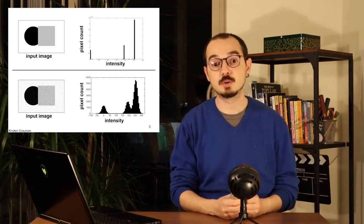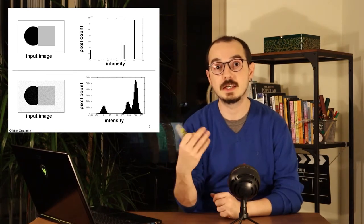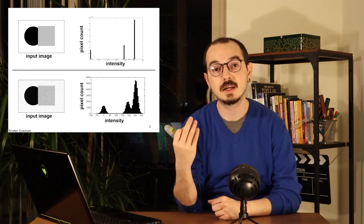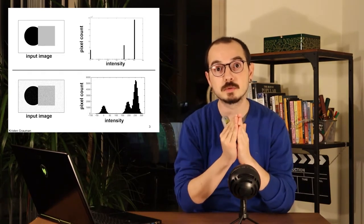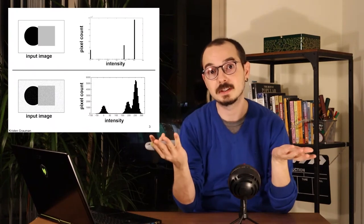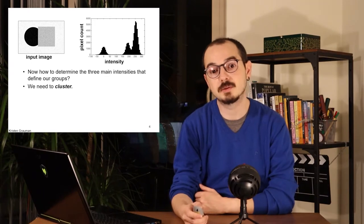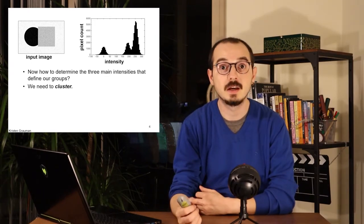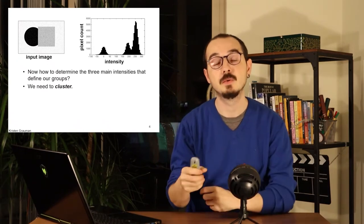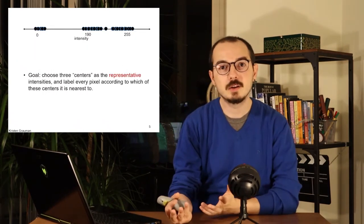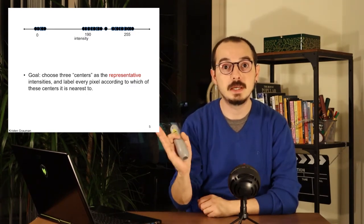If we add some light noise on the image, the histogram will start blending in. The gray and white pixels start overlapping because some of the noise makes white darker than the gray in the image and vice versa. In this case, we need to get a little bit more creative. We need to do clustering — define a way to put similar pixels in the same bin.